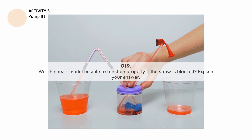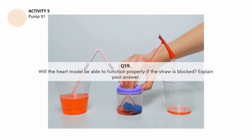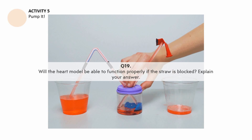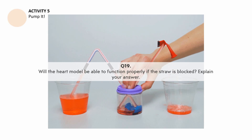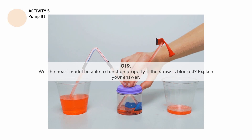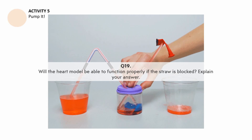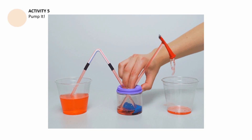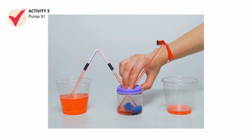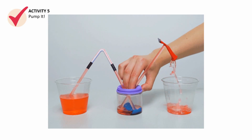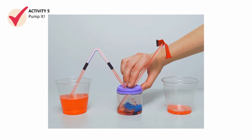Next, will the heart model be able to function properly if the straw is blocked? Explain your answer. That is the last question for activity number five, Pump It.